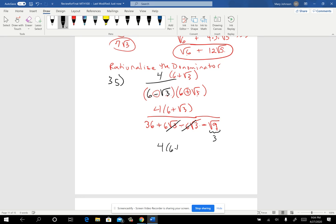And so on top, we have four times the quantity six plus square root of three. On the bottom, we have 36 minus three, and that's 33. Like with all the others, we would look to see if we could simplify, but four and 33 don't have anything in common. So we could leave our answer just like this.